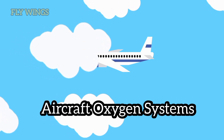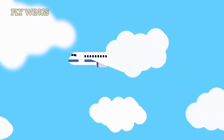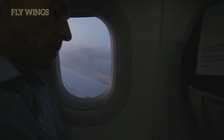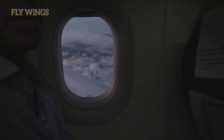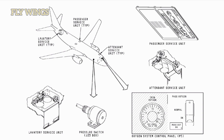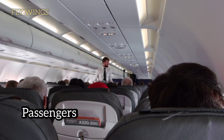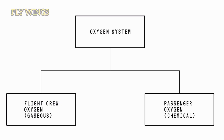In this video we are discussing aircraft oxygen systems. When altitude increases, atmospheric pressure decreases because the number of air molecules decreases. Aircraft oxygen systems supply oxygen to the flight crew, cabin crew, and passengers. Oxygen can be used for life sustaining if the aircraft depressurizes, for emergencies, and for first aid.